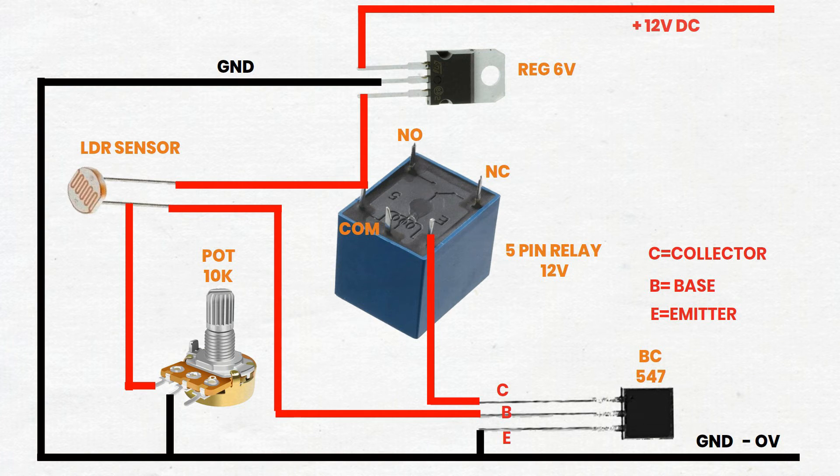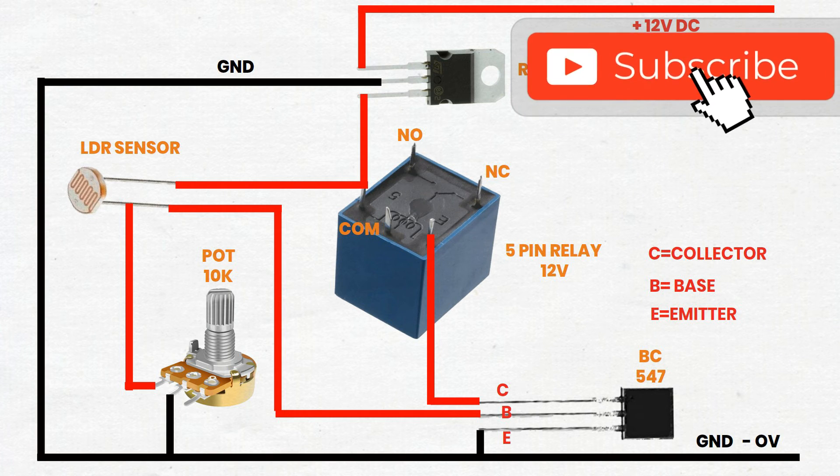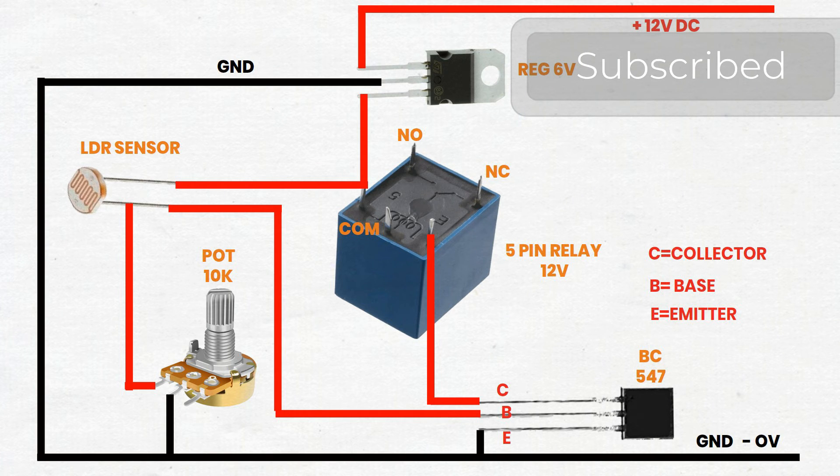Step 4. Connect the relay. Relay Coil: Connect one end to the transistor collector and the other end to the 6V supply.